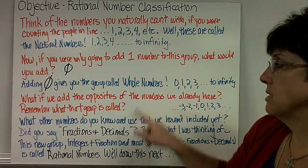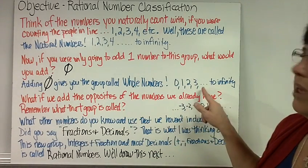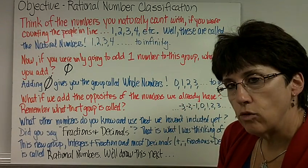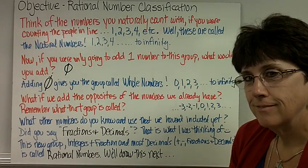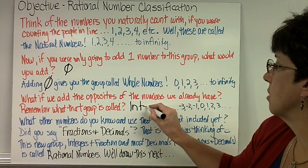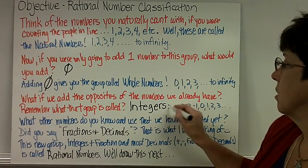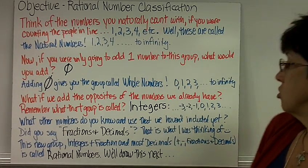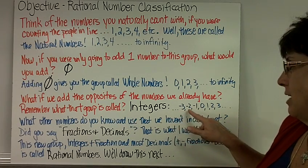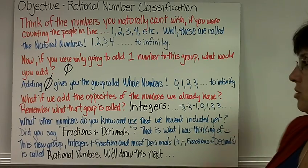What if we add the opposites of these numbers? The opposites of 1, 2, 3, 4 — well, not 0. Do you remember what that group is called? Hopefully you said integers. Integers start from negative infinity: negative 3, negative 2, negative 1, 0, 1, 2, 3, and go on to infinity.